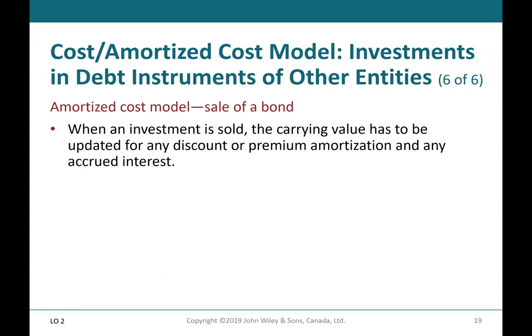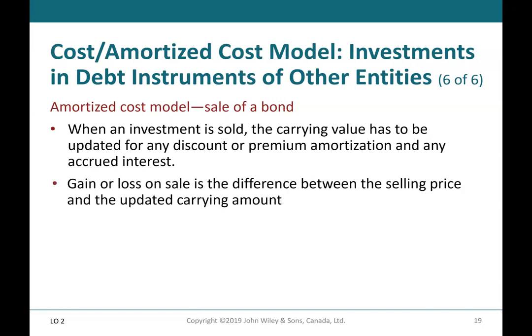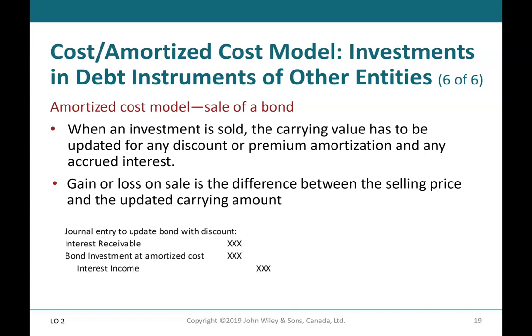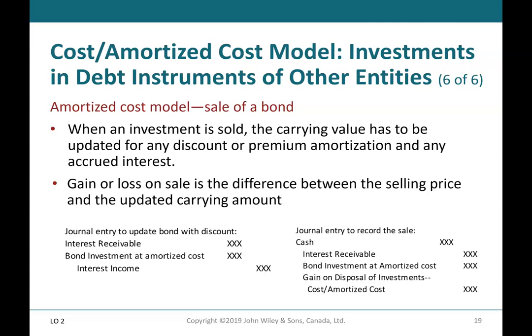Cost/amortized cost model — amortized cost model, sale of a bond. When an investment is sold, the carrying value must be updated for any discount or premium amortization and any accrued interest. The gain or loss on sale is the difference between the selling price and the updated carrying amount. Journal entry to update bond with discount: debit interest receivable; debit bond investment at amortized cost; credit interest income. Journal entry to record the sale: debit cash; credit interest receivable; credit bond investment at amortized cost; credit gain on disposal of investments — cost/amortized cost.